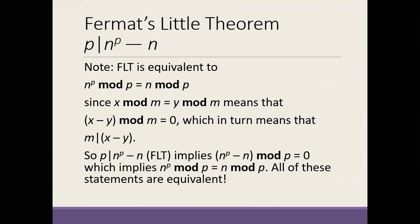Fermat's Little Theorem is equivalent to the statement that n to the p, taken mod p — that is, the remainder upon division by p — equals n mod p. Because x mod m equal y mod m means x minus y mod m is zero, which means m divides the difference. So p dividing n to the p minus n implies n to the p mod p equals n mod p. The remainder upon division by p of those two is the same.